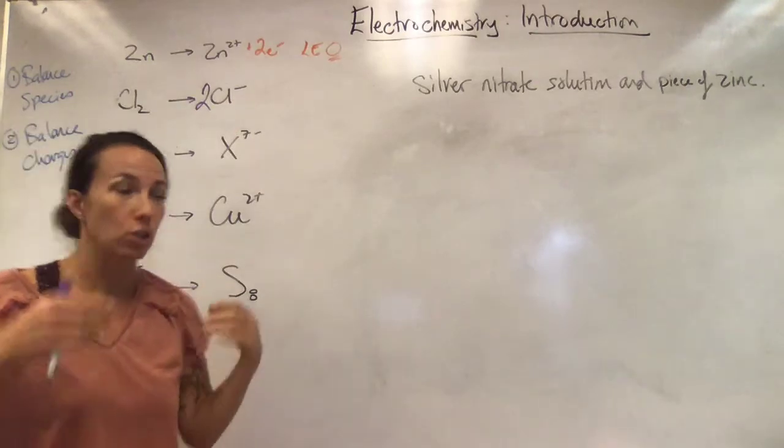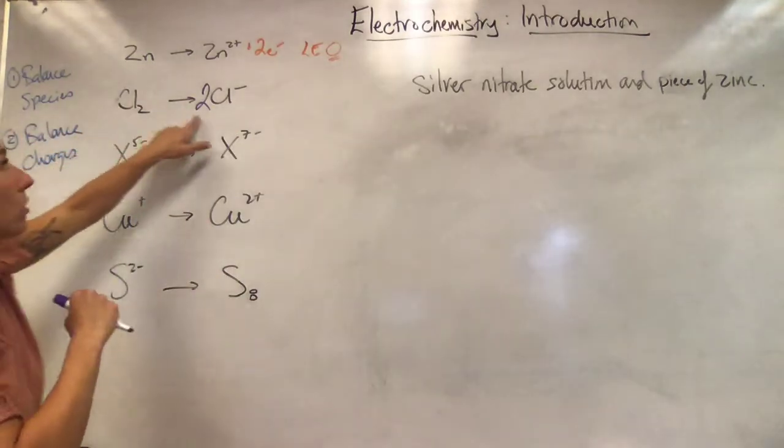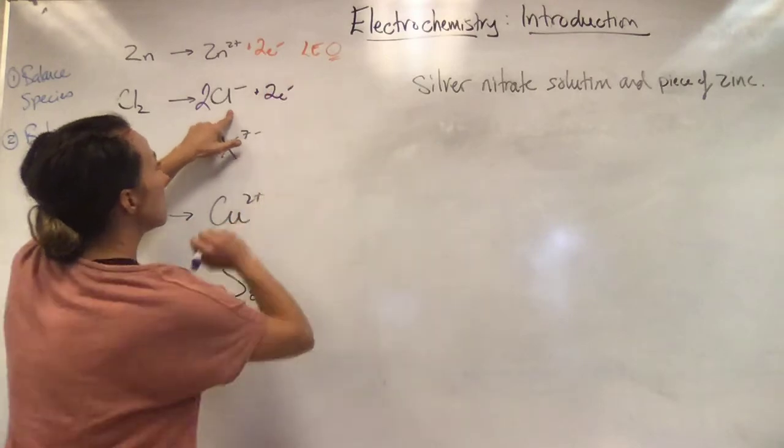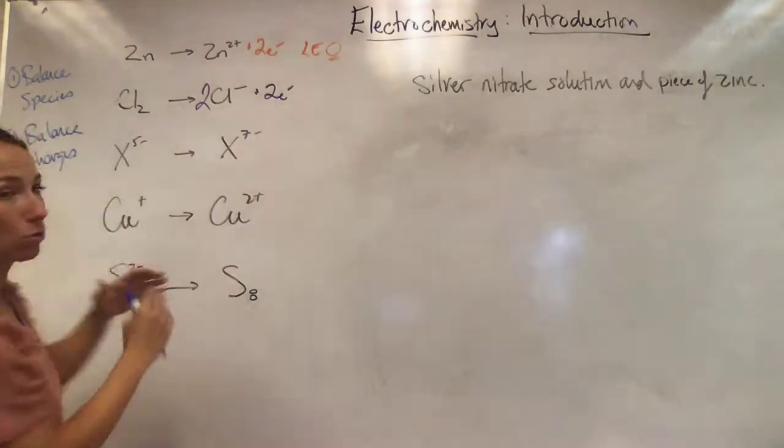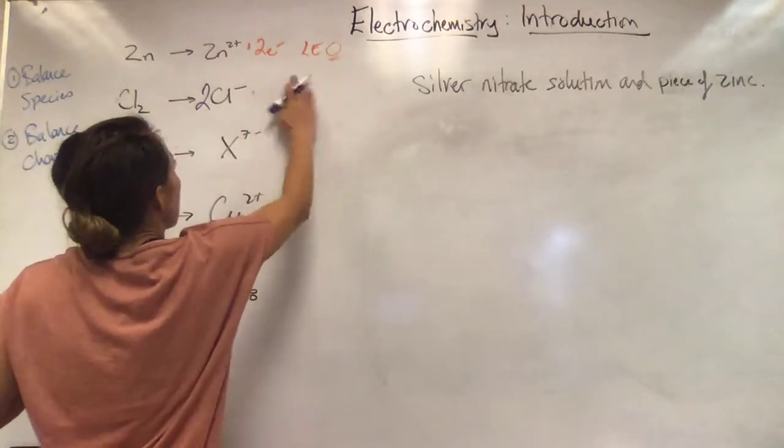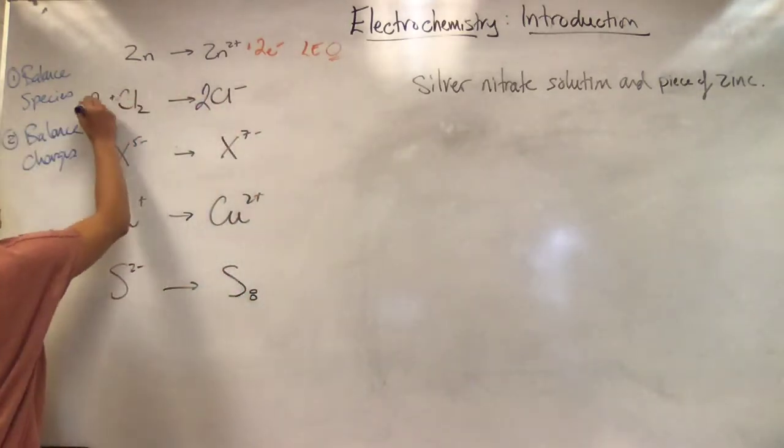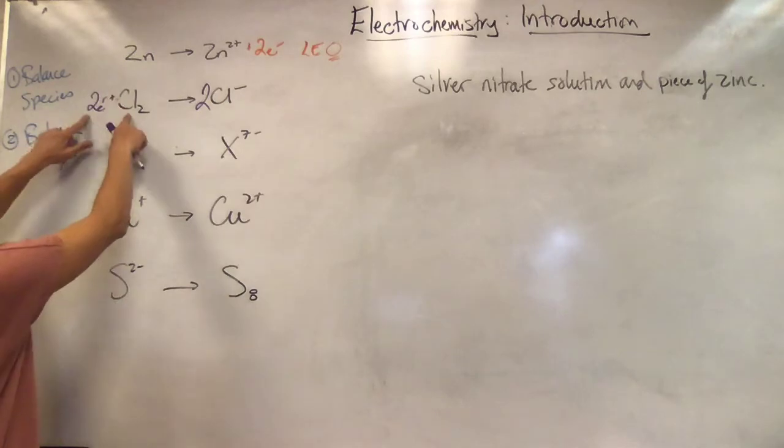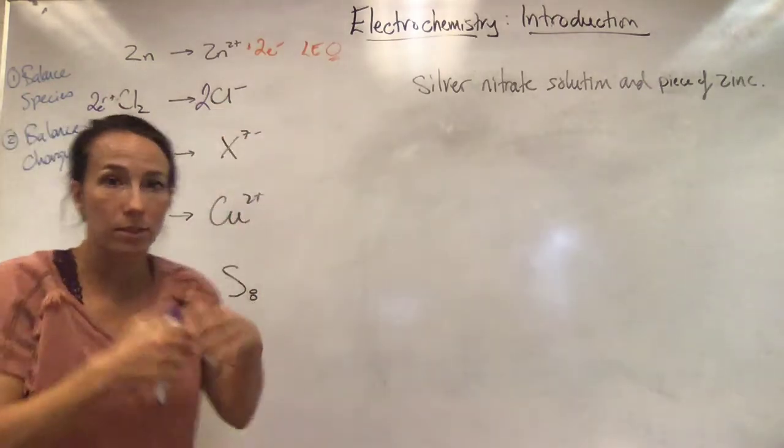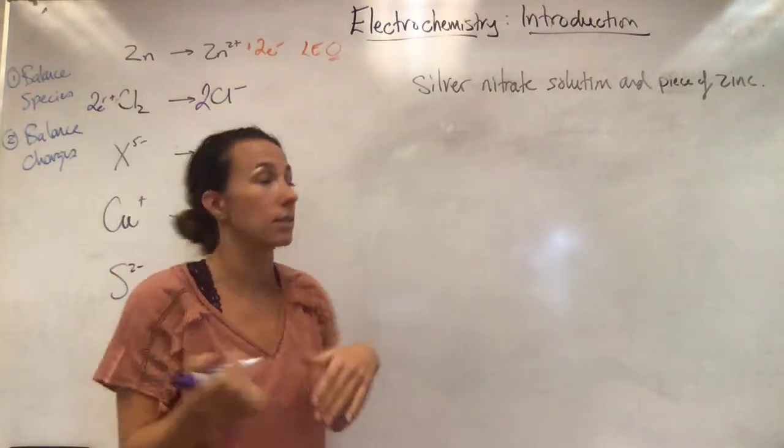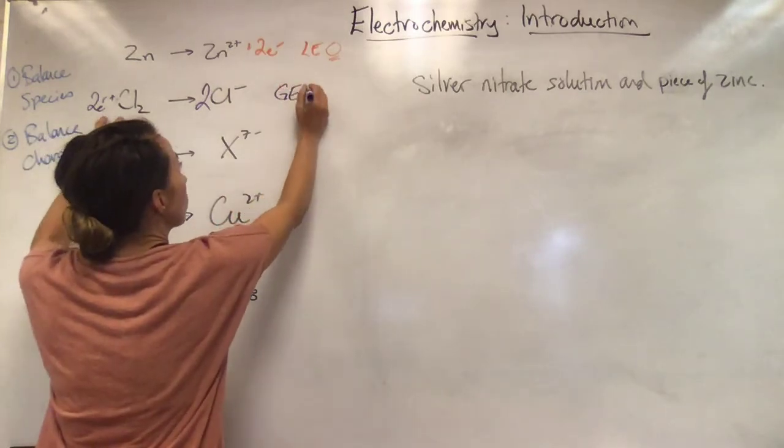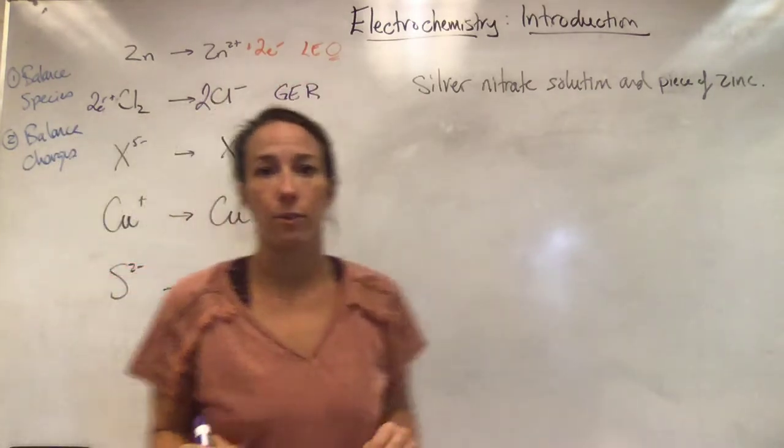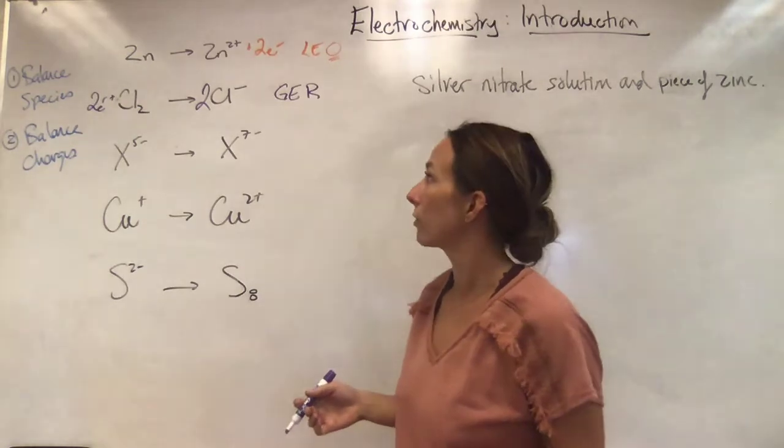So I need to put a big two here to have two CLs and two CLs. Now I'm going to fix my charges. Neutral and two negatives. If I add my electrons to this side, you can see that that's going to become four negatives, and that side's neutral. Problem. Wrong side. I've got to add them to this side, two electrons to that side. Now I have two negatives and two negatives. That's balanced. Left-hand side equals the right-hand side. This is picking up electrons or gaining electrons. So that's a reduction half reaction.